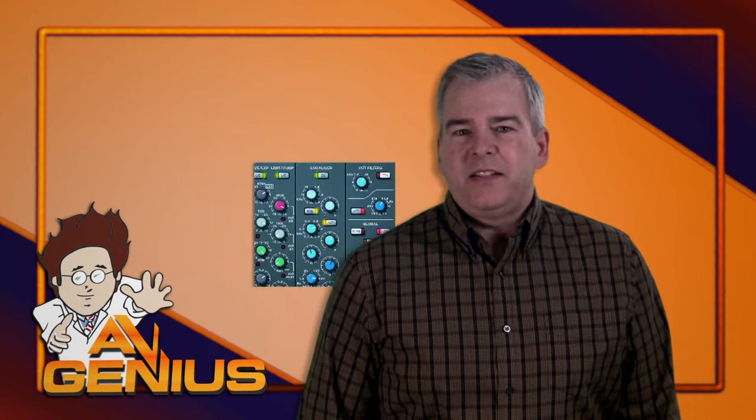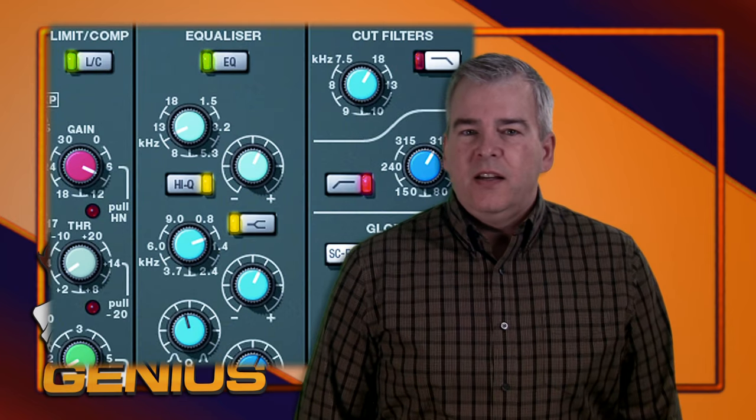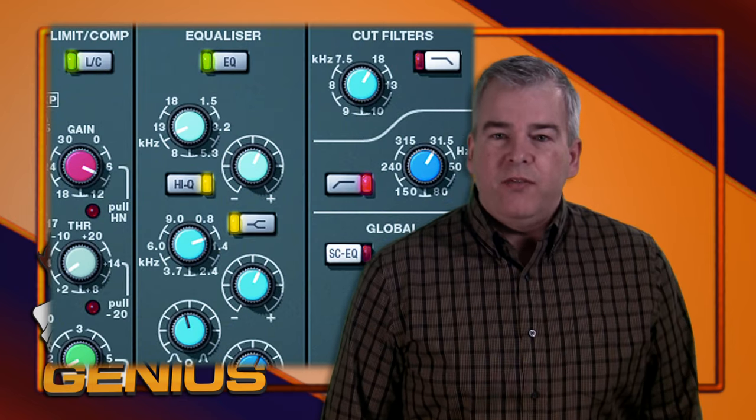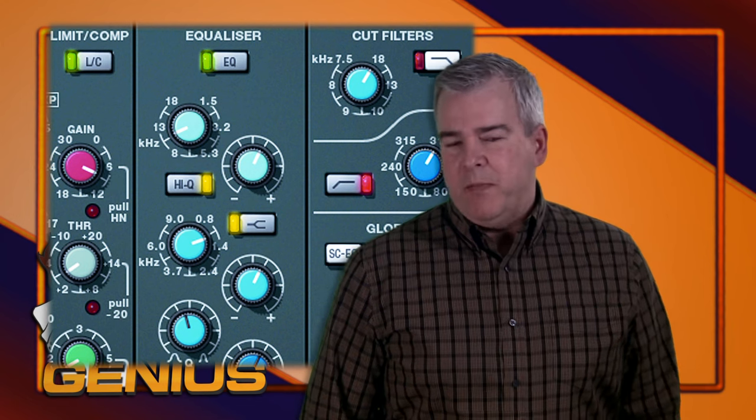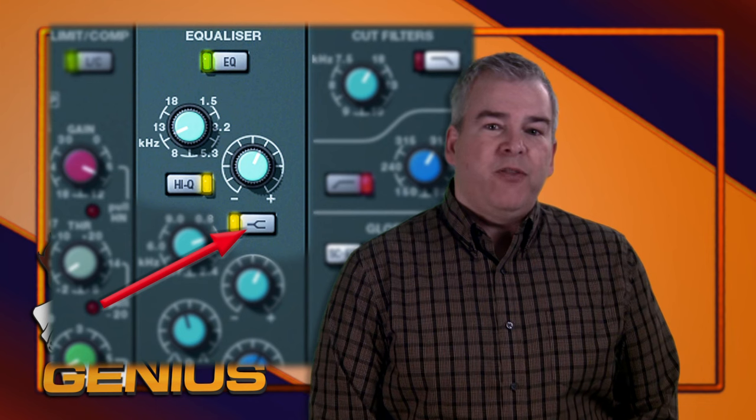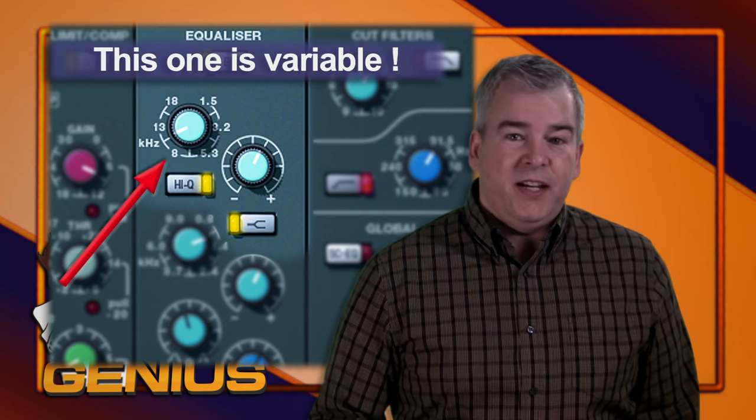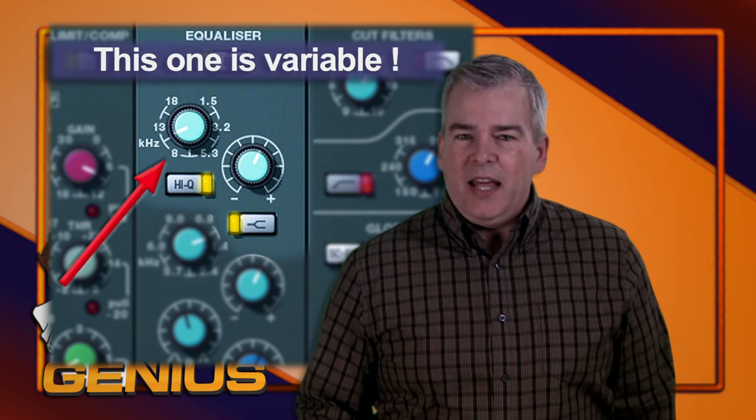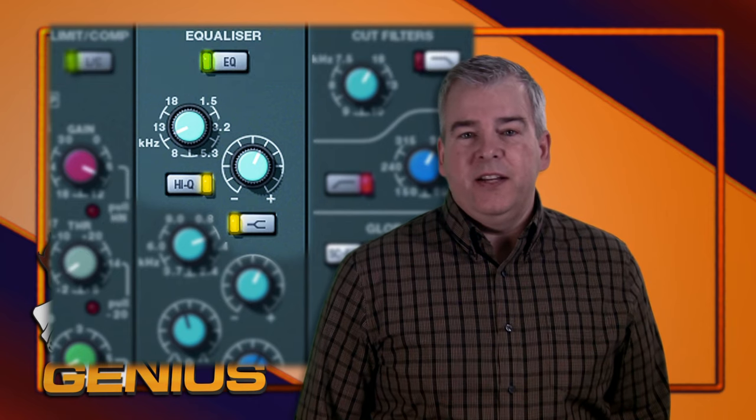The first EQ type is usually located at the top of the EQ block. It's called the high shelf or high on some boards. It can be labeled with a bracket and a shelf frequency number like 12 kHz or 10 kHz, but if it's not labeled, it's typically around 10 kHz.